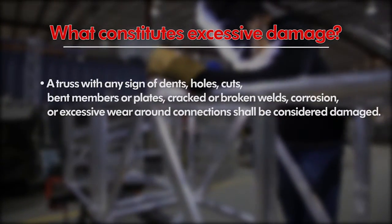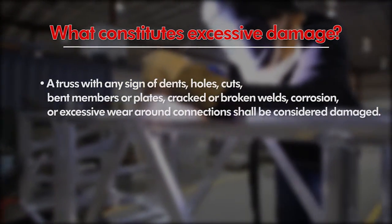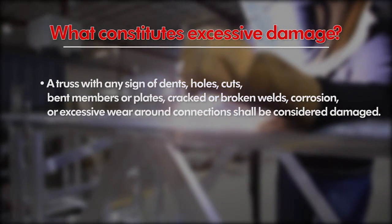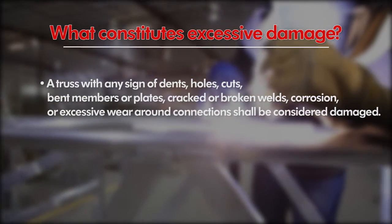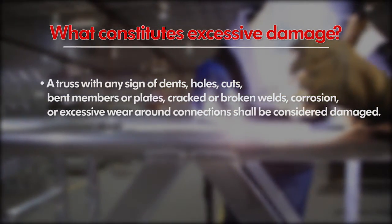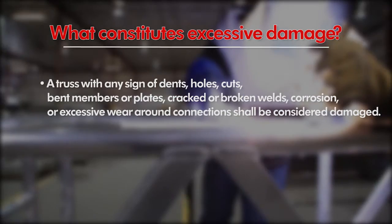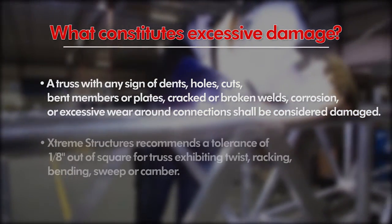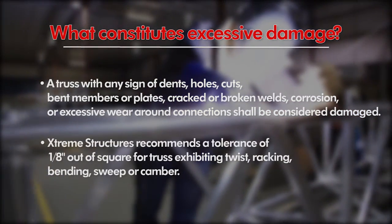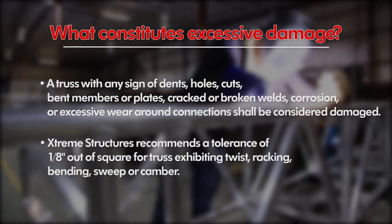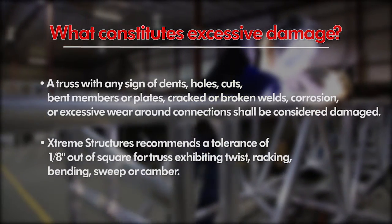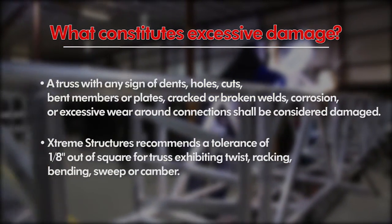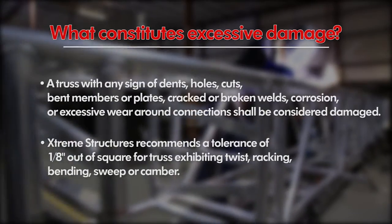A truss with any sign of dents, holes, cuts, bent members or plates, cracked or broken welds, corrosion, or excessive wear around connections shall be considered damaged. Extreme Structures recommends a tolerance of 1-1/8 inch out of square for truss exhibiting twist, racking, bending, sweep, or camber.